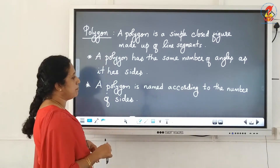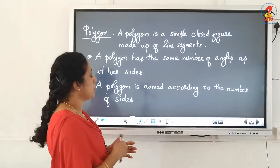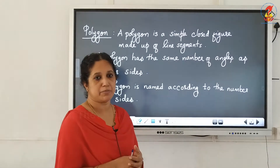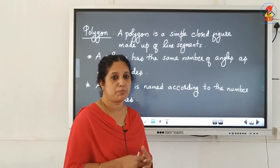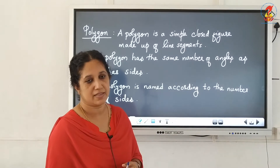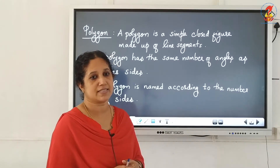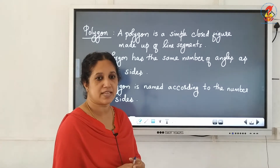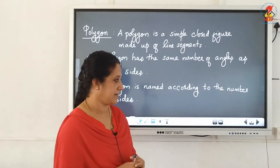A polygon is named according to the number of sides. We give the name to the polygon depending upon the number of sides. If there are 3 sides, we call it a triangle. If it has 4 sides, we call it a quadrilateral.